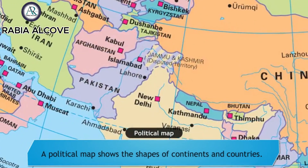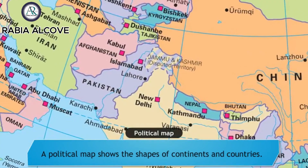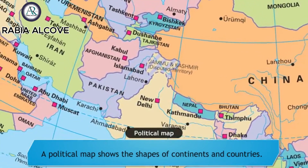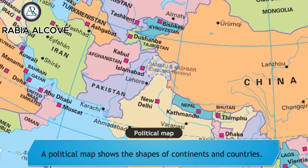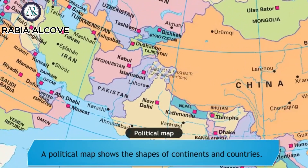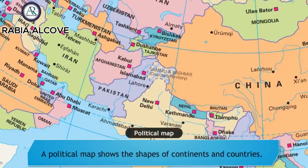Political maps show the political boundaries of each country along with the location of major and minor cities. A political map also shows the major water bodies.